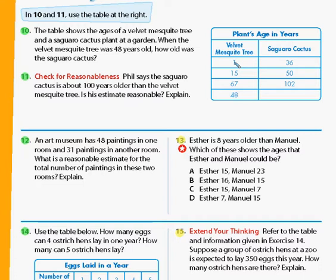When we're talking about ages of things, we know it's going to be an addition or subtraction type of rule. So if the mesquite tree is one year old and the cactus is 36 years old, the difference in their age is going to be plus 35. Going from the velvet mesquite tree to the cactus, plus 35.